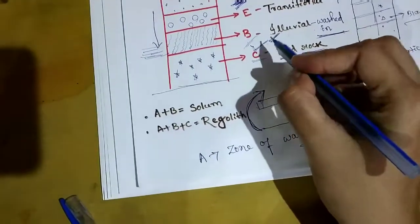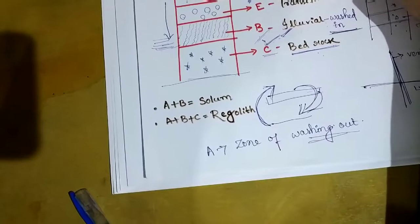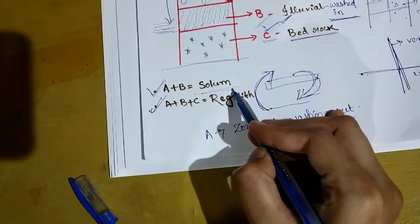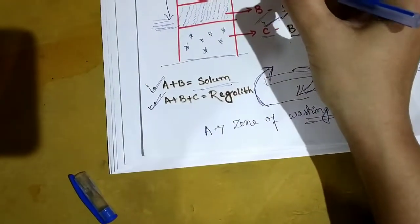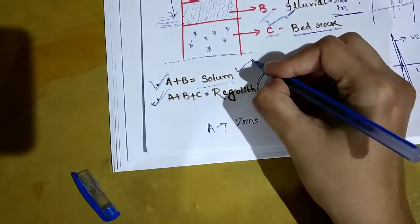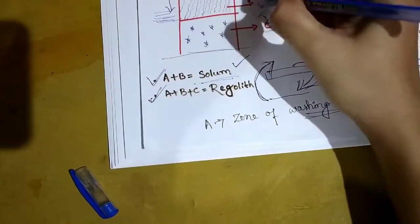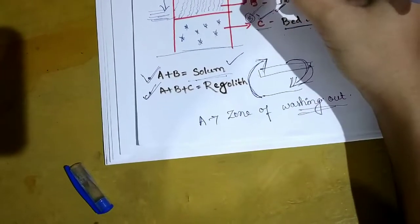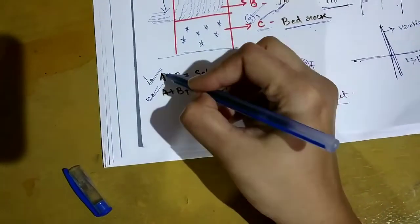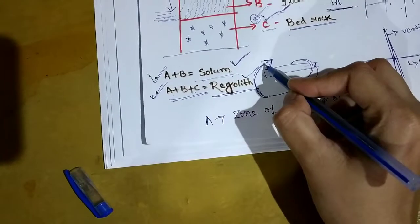For exam questions: know the five master horizons. Also remember: if we combine A horizon plus B horizon together, they are called solum. If we combine A plus B plus C horizons together, that is known as regolith. So A plus B = solum, whereas A plus B plus C = regolith.